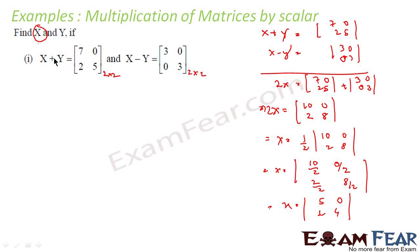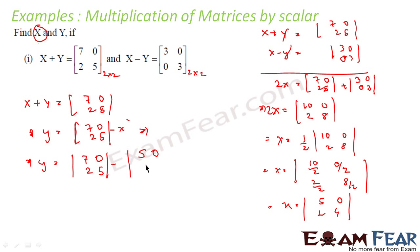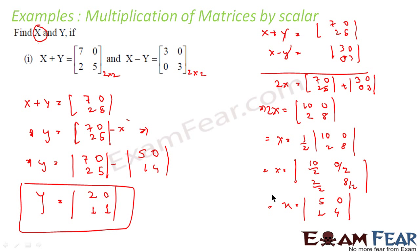Very simple. I can use the first equation X plus Y equals [7 0; 2 5], so Y is nothing but [7 0; 2 5] minus X. X value we already know: that is [5 0; 1 4]. So Y equals [7 0; 2 5] minus [5 0; 1 4]. Subtracting: 7−5=2, 0−0=0, 2−1=1, 5−4=1. So this is my value of Y. I got the Y matrix and I got the X matrix.